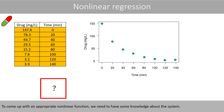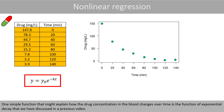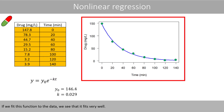To come up with an appropriate nonlinear function, we need to have some knowledge about the system. One simple function that might explain how the drug concentration in the blood changes over time is the function of exponential decay, which we have discussed in a previous video. If we fit this function to the data, we see that it fits very well.